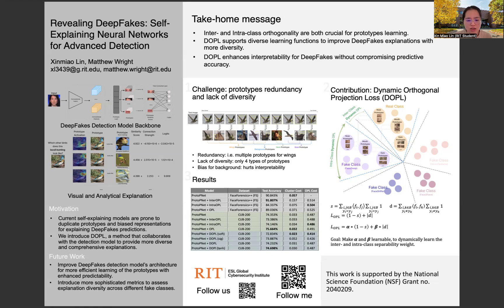To understand our contribution, let me first explain how current self-explaining models work in deepfake detection. These models use what we call prototypes — essentially, learned patterns that the model uses to make and explain its decisions. Think of them as key visual signatures that distinguish real from fake content. For example, in a real image, a prototype might learn to identify natural skin textures, while in deepfakes, it might detect artificial smoothing or unnatural transitions.